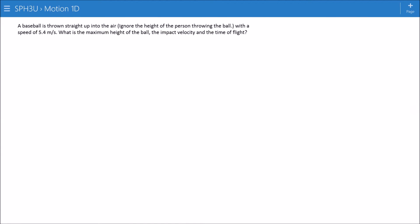A baseball is thrown straight up into the air with a maximum speed of 5.4 meters per second. What is the maximum height of the ball and the impact velocity and the time of flight? Okay. So, here's our baseball player. It says to ignore the height of the person throwing the ball. So we're going to assume he throws the ball almost exactly from the ground. He's going to throw it up. He's going to come back down and hit the ground.